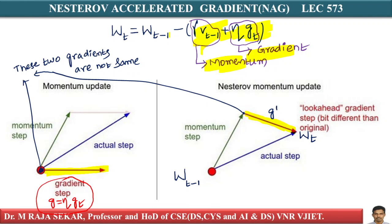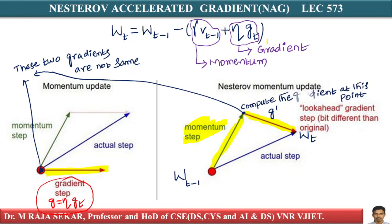What Nestrov Accelerated Gradient says is: first compute the momentum and move in the momentum direction. First move there — move to w_dash. After reaching w_dash, what do you do? You compute the gradient at that point w_dash. So g_dash is the gradient at w_dash. That is important: g_dash is the gradient at w_dash.